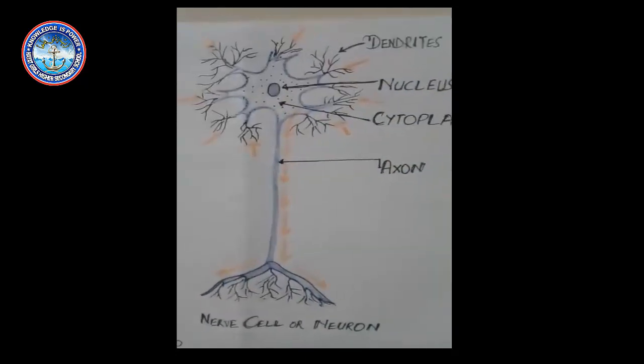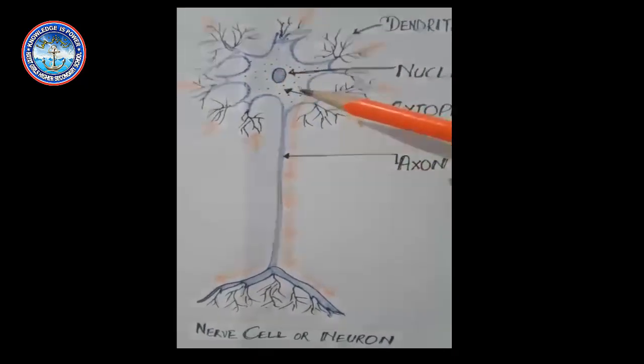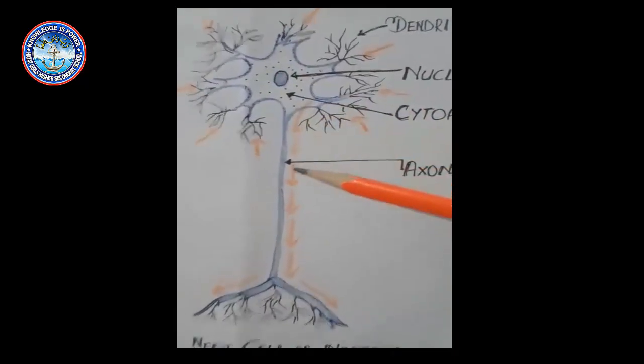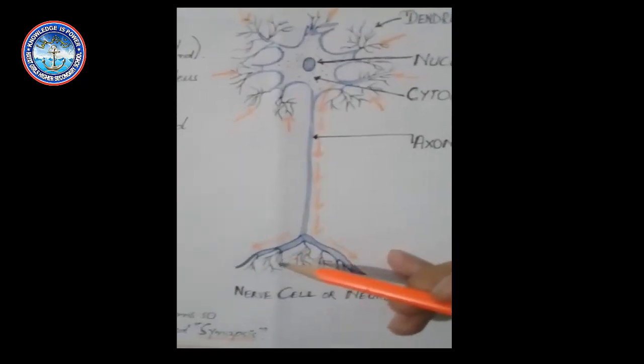Now the message enters into the cytoplasm. Cytoplasm leads this message toward the axon. The message from one neuron to another neuron is transmitted by synapses.